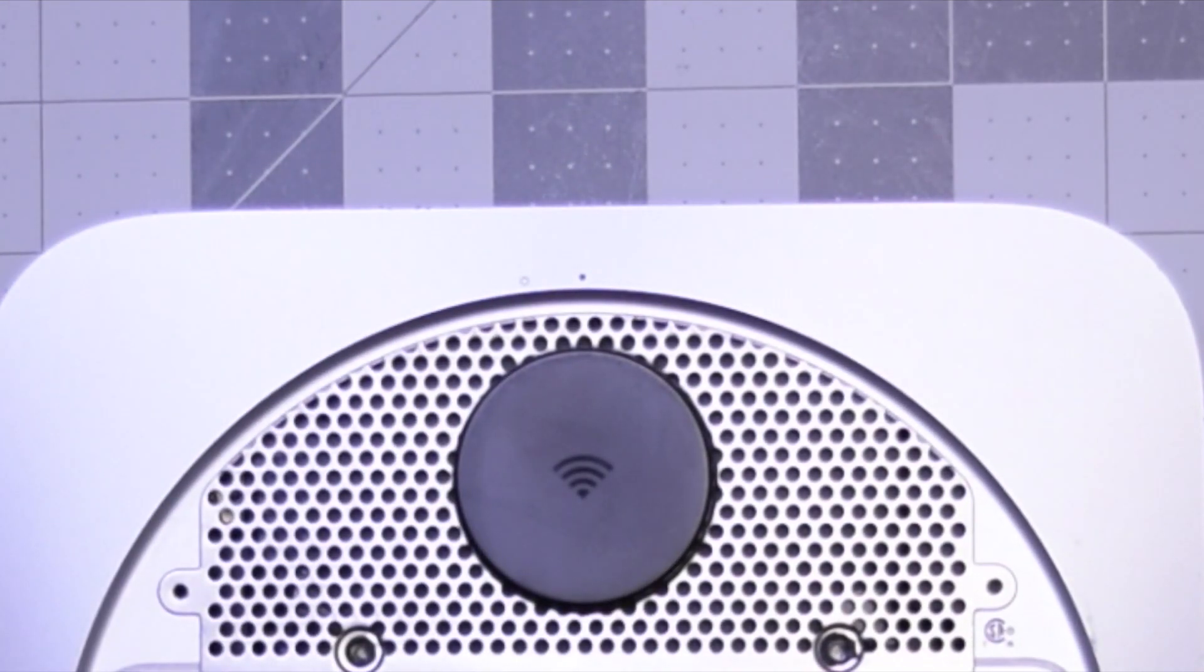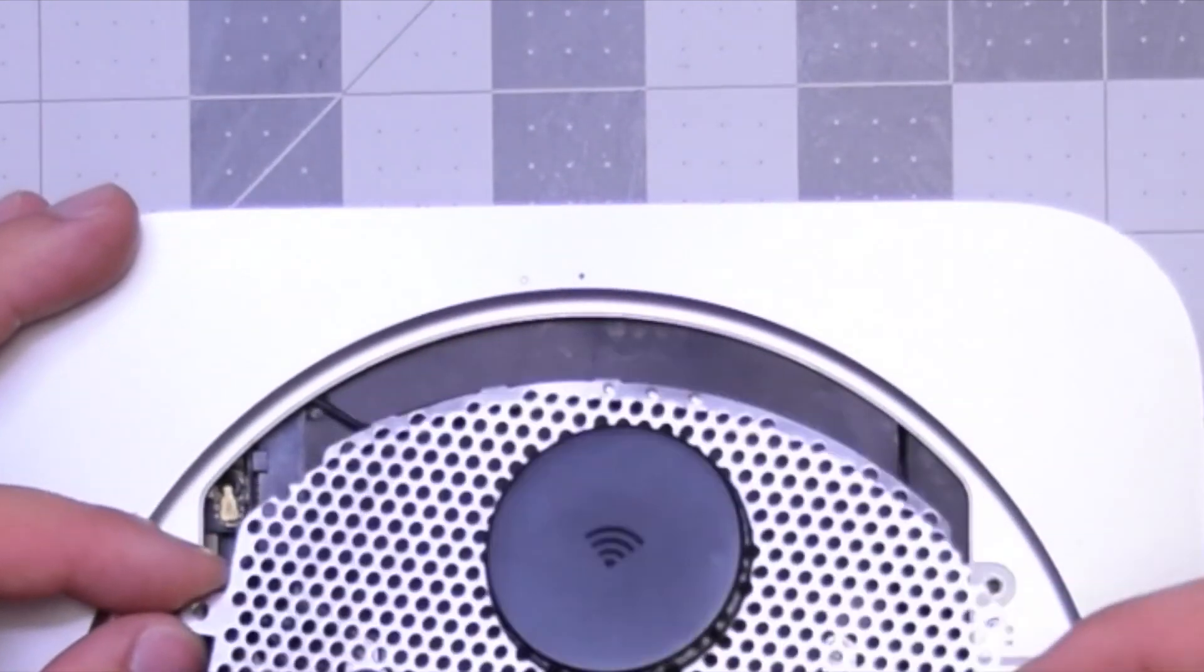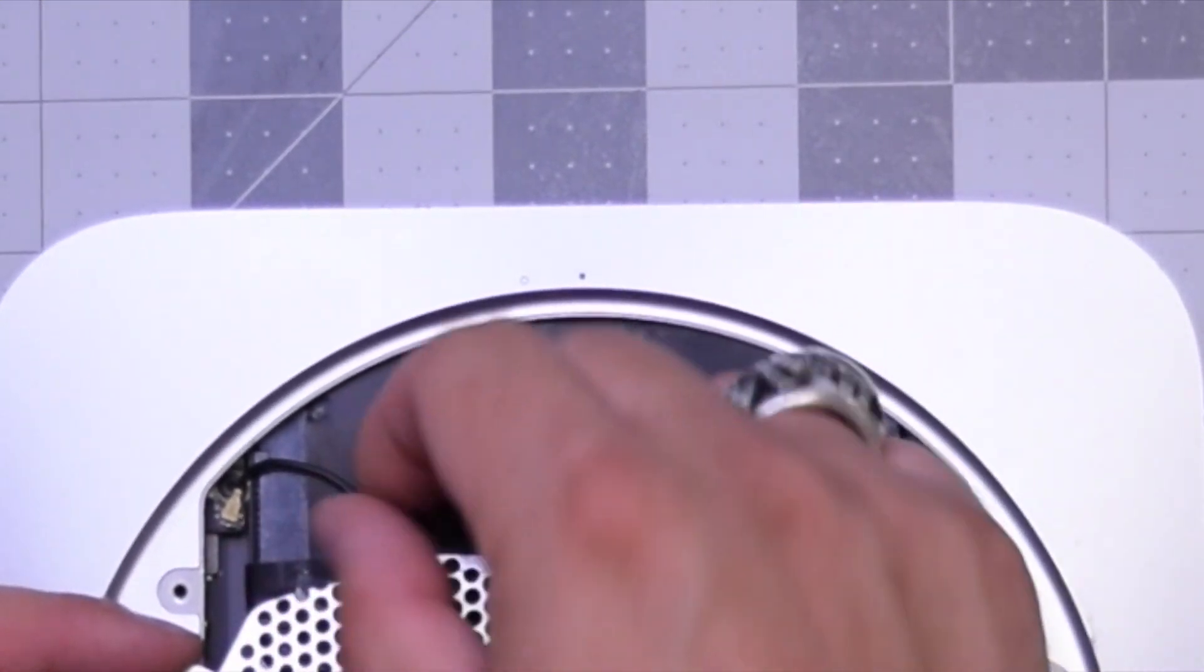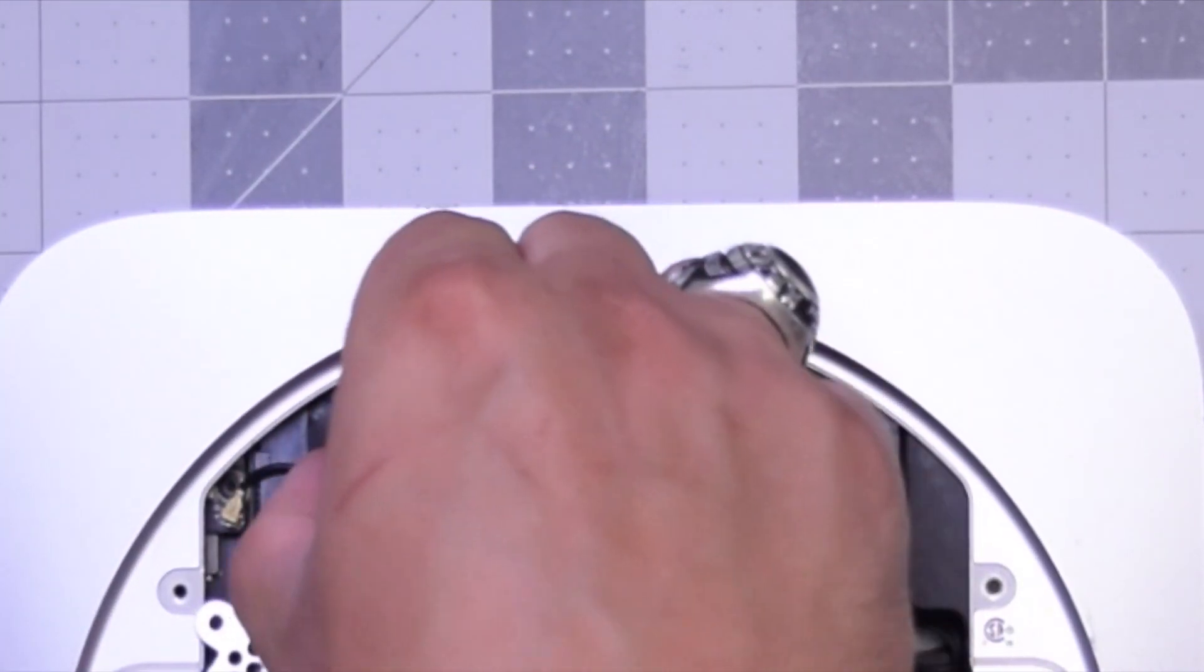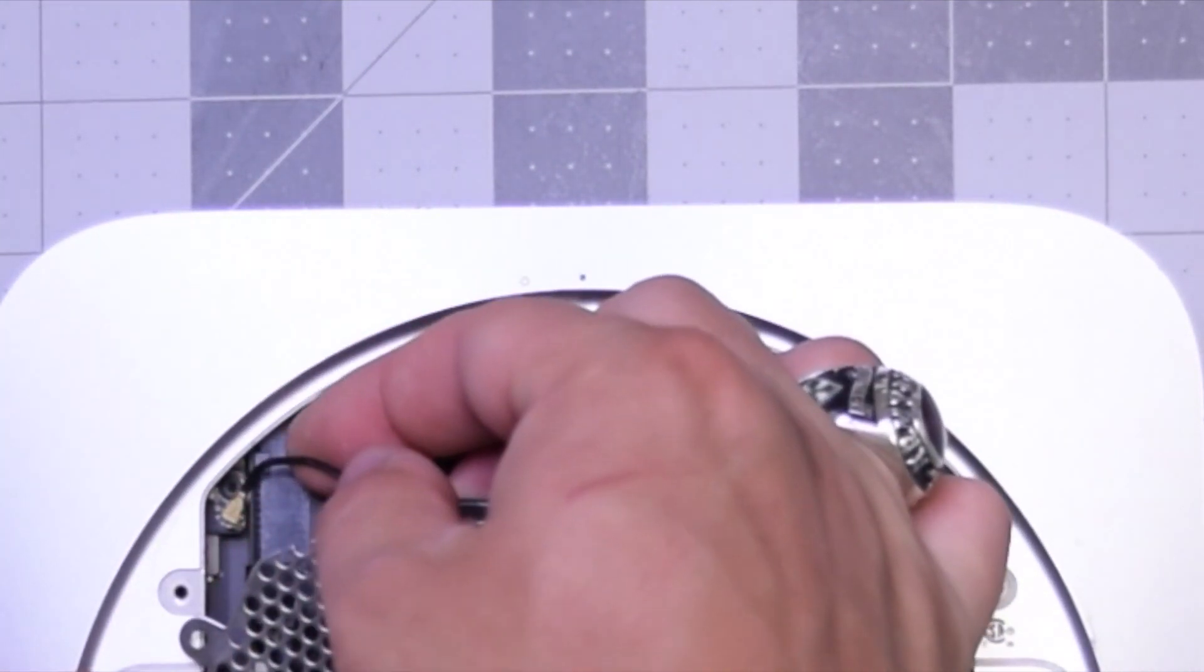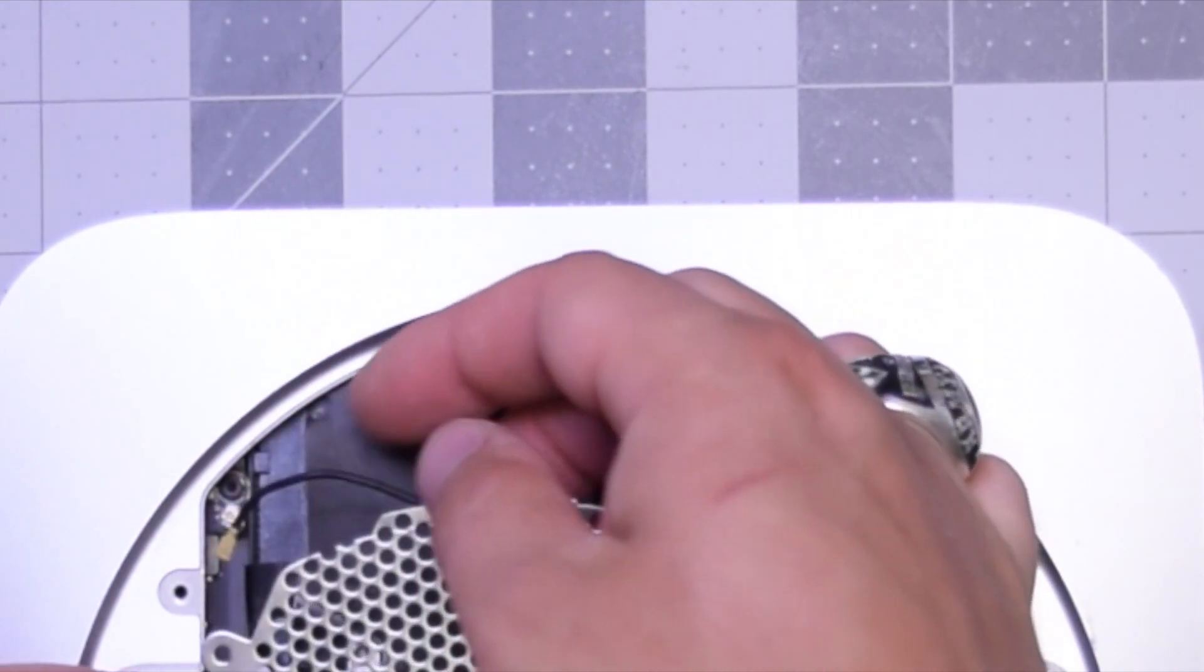With those removed, you can go ahead and start lifting up the Wi-Fi antenna. It's connected. Go ahead and pull that connection apart gently. Just pop it up and out. There we go. Wi-Fi antenna is out.